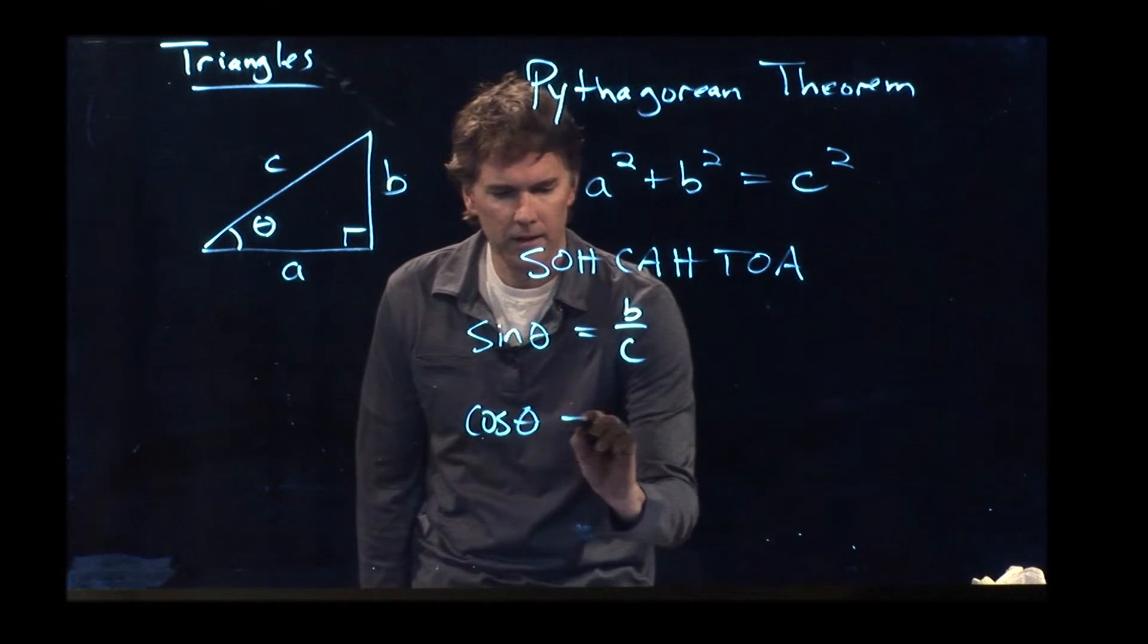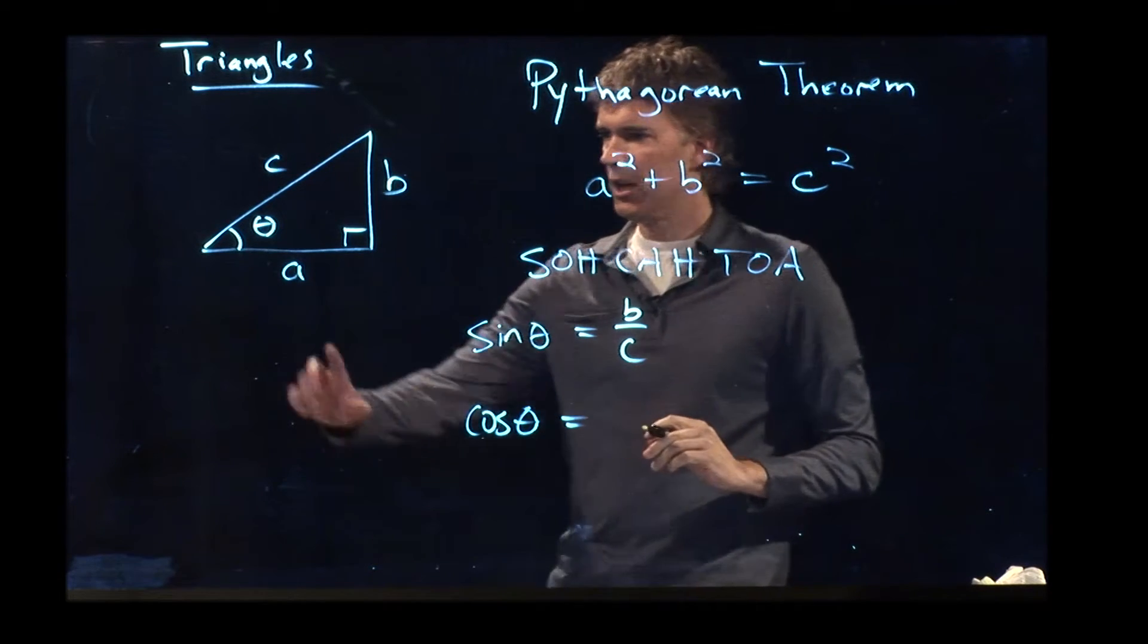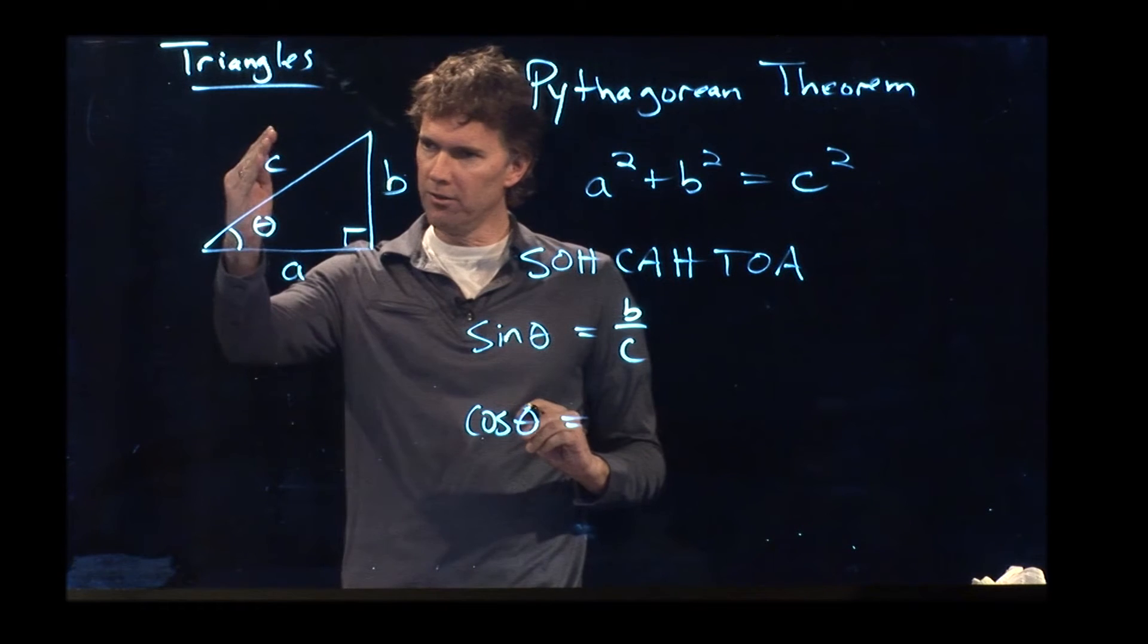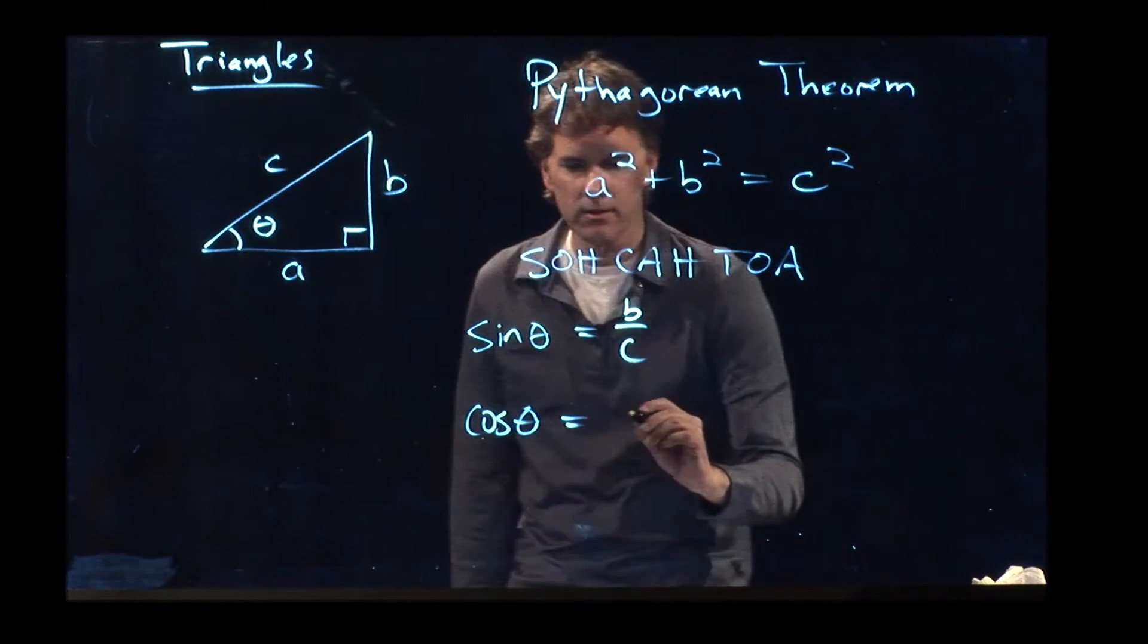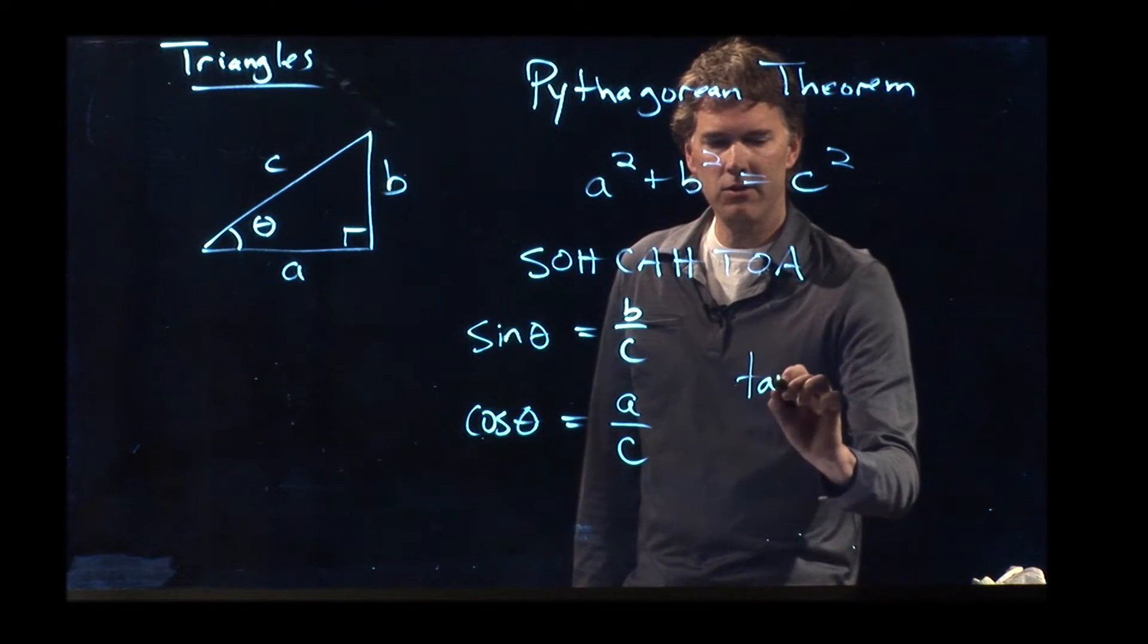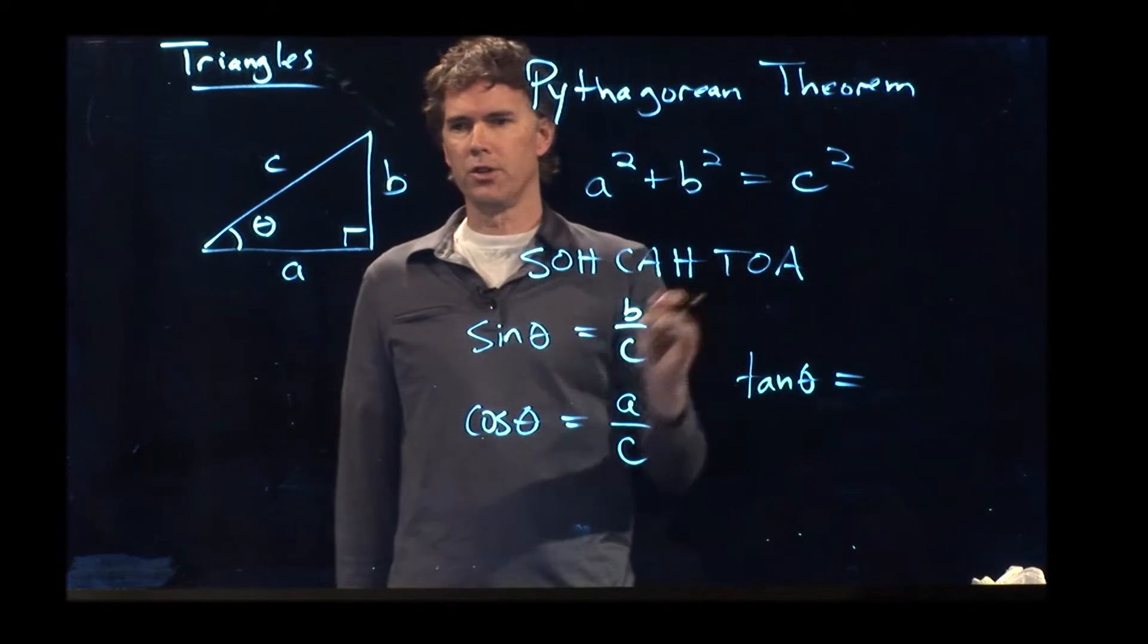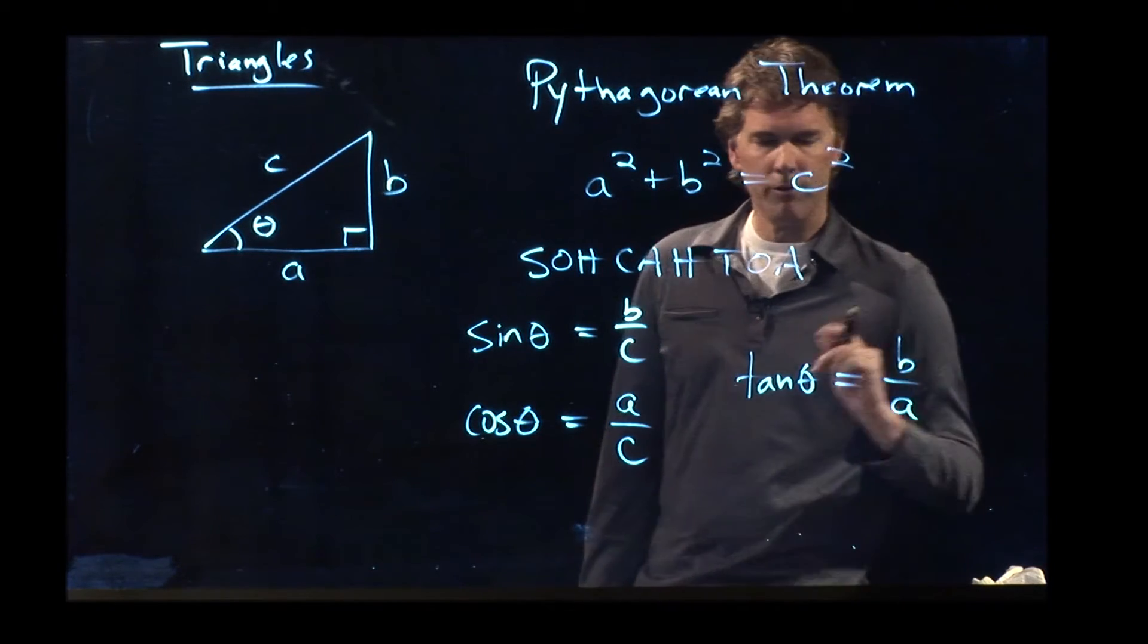Cosine of theta is adjacent over hypotenuse. Adjacent means adjacent to the angle. If this is the hypotenuse, this is the only other side that is adjacent to the angle. So we have to have A over C. And then finally, tangent of theta is opposite over adjacent, which would be B over A.